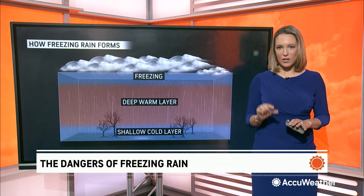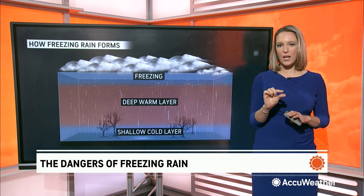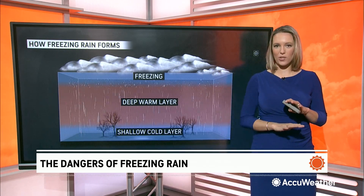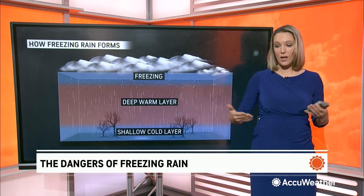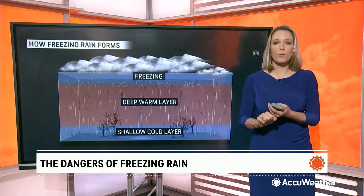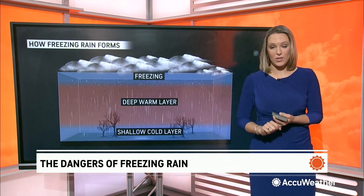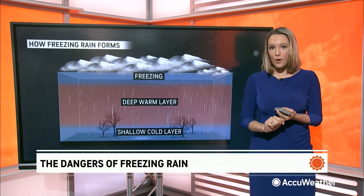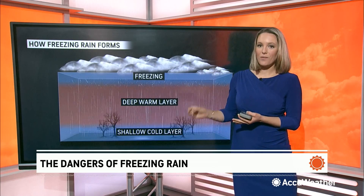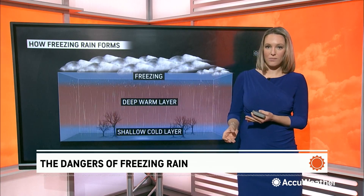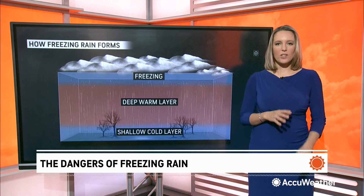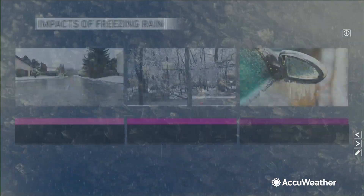Then it gets to the ground. It could be the lowest level of the atmosphere that is cooler, and just cold enough on the surface of any structure or any item on the ground — it could be tree branches, the pavement on roadways, or even the grass. If that is below freezing, that water will freeze to it, so it actually becomes a sheet of ice. And that's why it is so dangerous and so challenging to get out and about in.